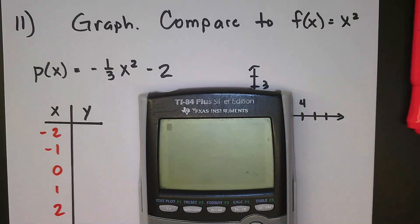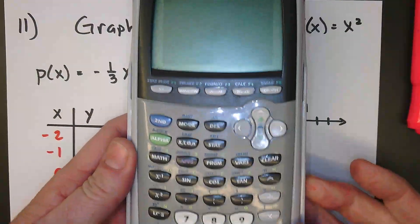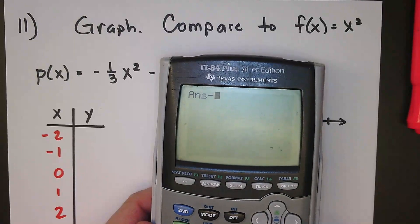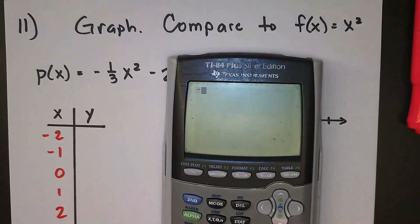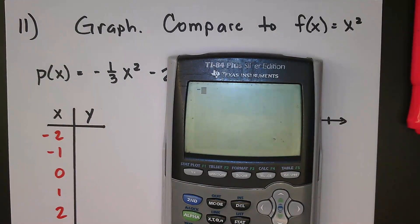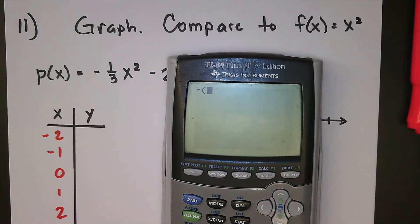So I'm going to type this in. I'm going to start with a negative. It's really important that I start with a negative as opposed to actually hitting the subtraction symbol. If I do that, you can see it's going to try to subtract it off the previous answer. So I want to do negative, and then for me, anytime I enter a fraction, I always put it in parentheses. It's one divided by three in parentheses.